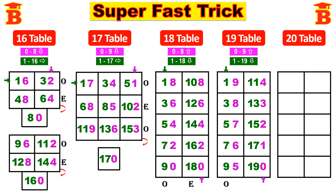Therefore the 19th table — see the green color arrow mark and take it in that order. So the table is: 19, 38, 57, 76, 95, 114, 133, 152, 171, and 190.